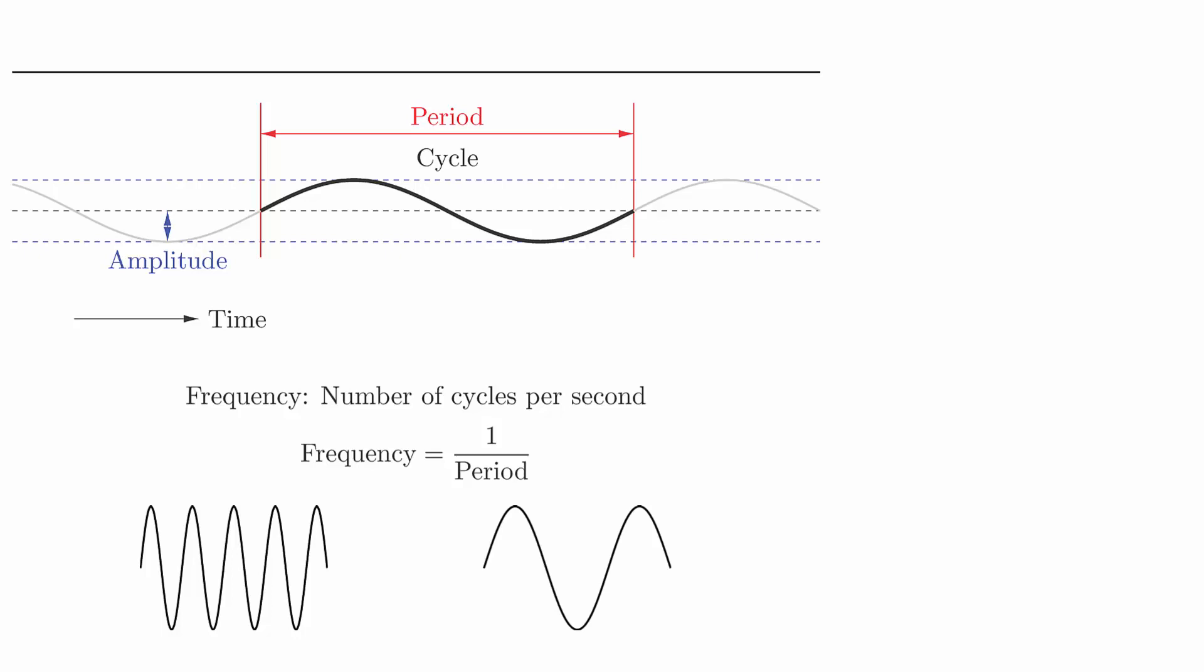The simplest mathematical models for simple harmonic motion are y equals a sine omega t and y equals a cosine omega t, where omega is a positive number. Under these models, we have these formulas for the amplitude, period, and frequency.